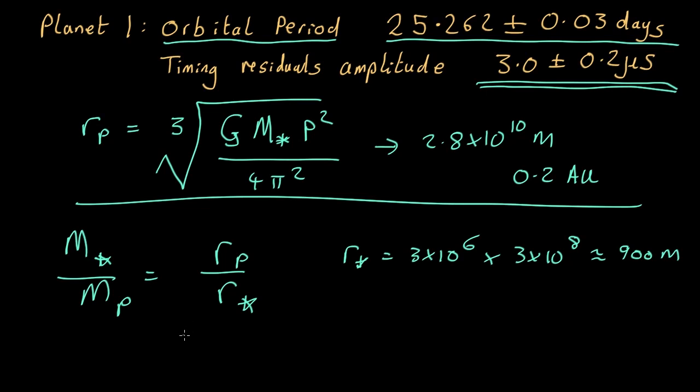So what we can learn from that is that m planet sin i is about 0.02 times the mass of the Earth. So this is probably a little baby planet. If the orbit is edge-on, so sin i is 1, then the mass of the planet is only 2% of the Earth.